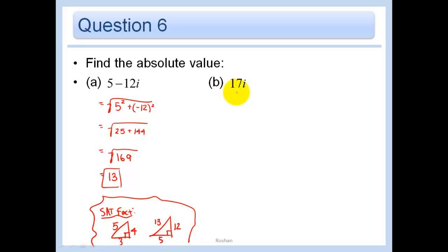Okay, so here, well, you might be wondering what happened to the real number part. Well, the real number part is zero, right? So when I do a squared, that's just zero squared plus b squared is just 17 squared. And obviously, the root of 17 squared is just 17 itself. So that's my answer there. And that's it for this lesson.